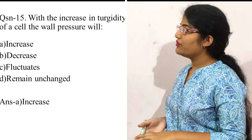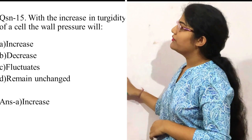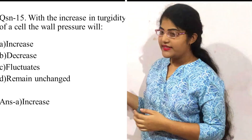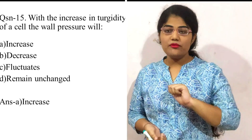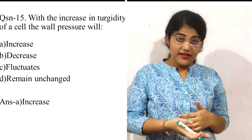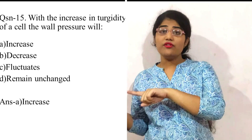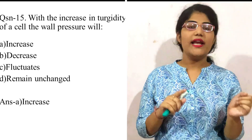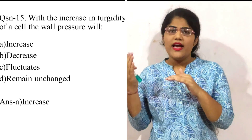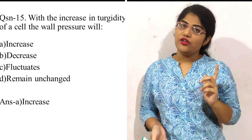Question number fifteen: with the increase in turgidity of a cell, the wall pressure will do what? Options are increase, decrease, fluctuate, or remain unchanged. Turgor pressure is always equal and opposite to wall pressure. So if turgidity increases, the wall pressure also increases. The correct option is A, wall pressure increases.